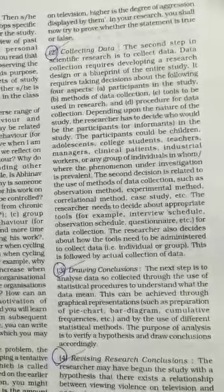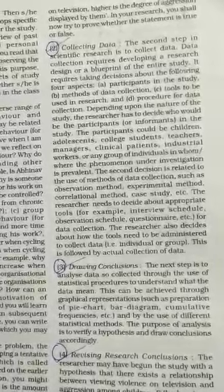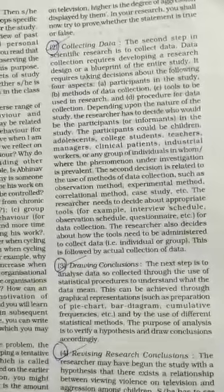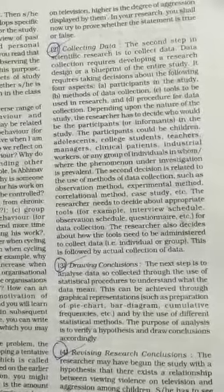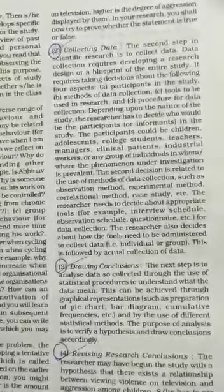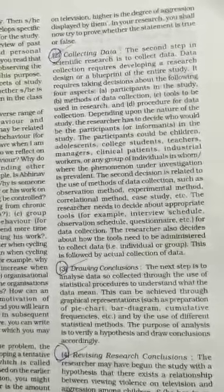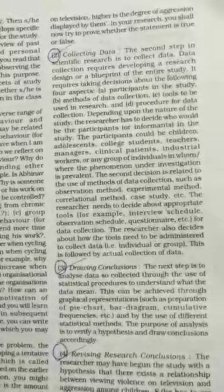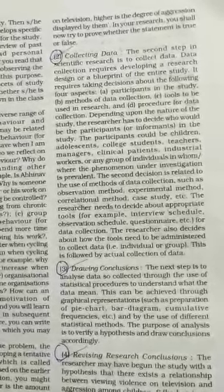Depending upon the nature of the study, the researcher has to decide who should be the participant or informant — one who is providing the information. The participant could be children, adolescents, college students, teachers, managers, clinical patients, industrial workers, or any group of individuals in whom the phenomena under investigation is prevalent.